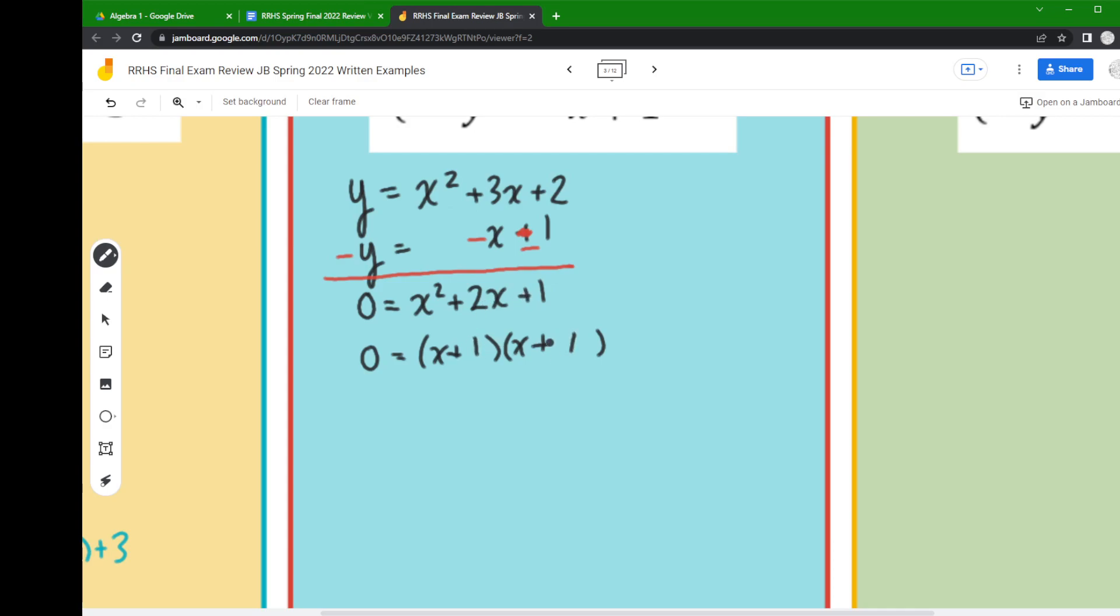Now notice these sets of parentheses say the exact same thing. So when I go to do my mini equations with the zero product property, I really only have to make the one mini equation, otherwise I'm doing the same thing twice and it's really not necessary.